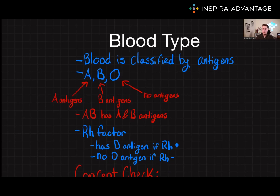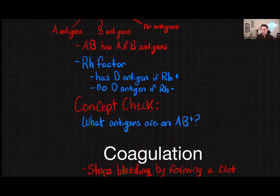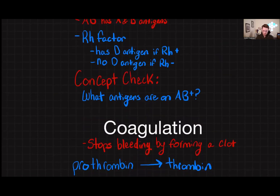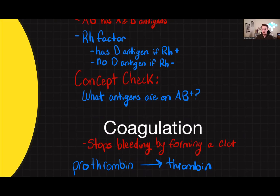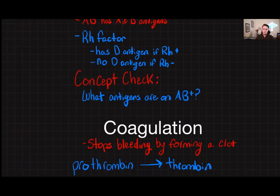Another important factor in blood typing is the Rh factor, which stands for rhesus. The rhesus factor refers to the presence or absence of a protein called the D antigen on the surface of red blood cells. If somebody is Rh positive, they have the D antigen; if they are Rh negative, they do not. So a person's blood type can be described as A+, B-, AB+, O-, etc. Let's do a quick concept check: what type of antigens would you expect to see on an AB positive blood person? Well, it's presenting A, presenting B, and presenting the Rh D factor — presenting antigens for everything.